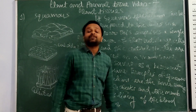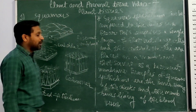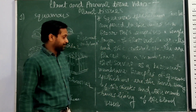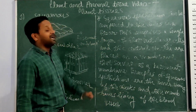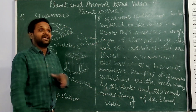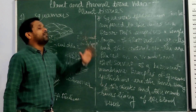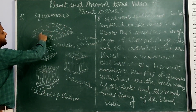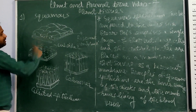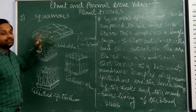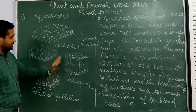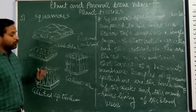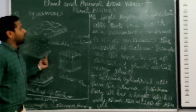An example of squamous epithelium is the inner lining of the cheeks, and the lining of blood vessels. The squamous epithelium cells are flat in nature — their height is very, very less, but their width is more. Width is more but height is not more, unlike other cell types where a lot of height is present.